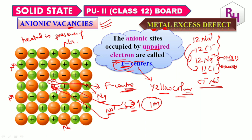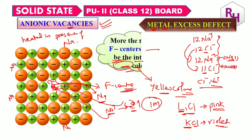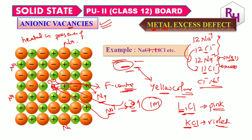More the number of F-centers, more will be the intensity of the color. Examples: NaCl, LiCl, which we already discussed. Then, metal excess defect can also occur due to the presence of extra cations at the interstitial site.